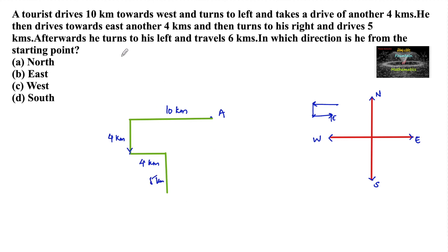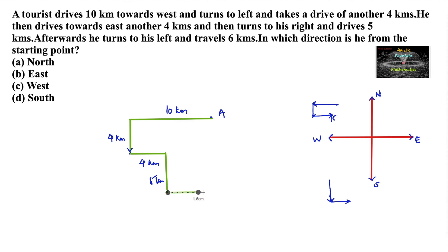Afterwards he turns to his left and travels 6 km. Now he is facing the southward direction and he is taking a left. We should be careful here — from our perspective it appears as right, but he is moving towards the east direction again for 6 km.